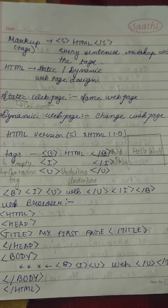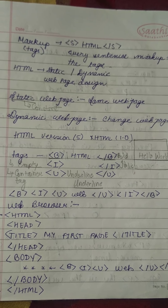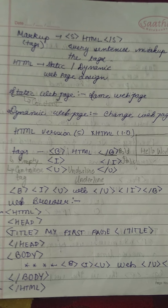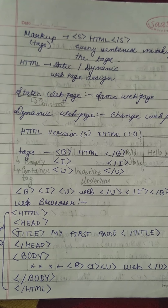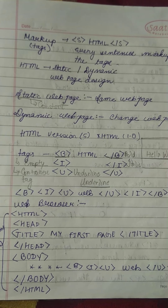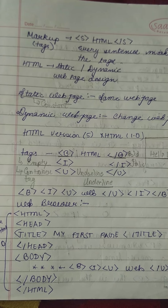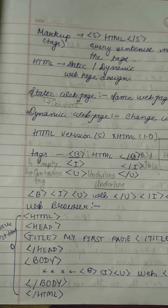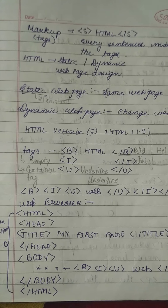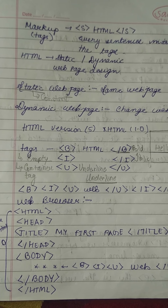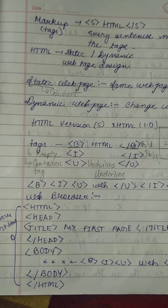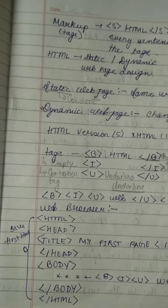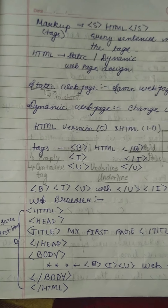These are formatting tags — bold, italic, and underline. If you have studied MS Word or LibreOffice before, you must already know what bold, italic, and underline are. These are called formatting tags. Now this is our first HTML program.